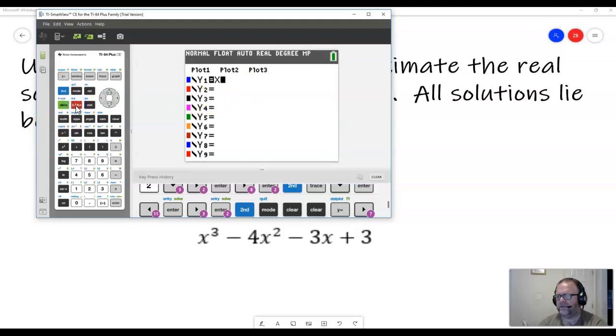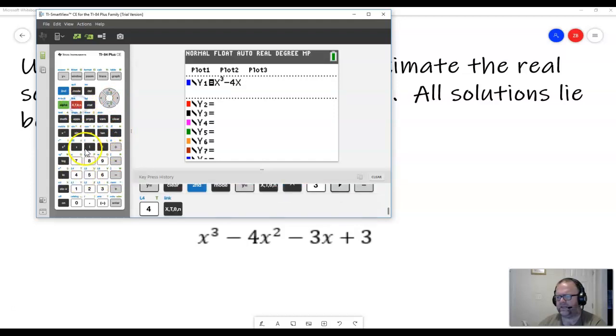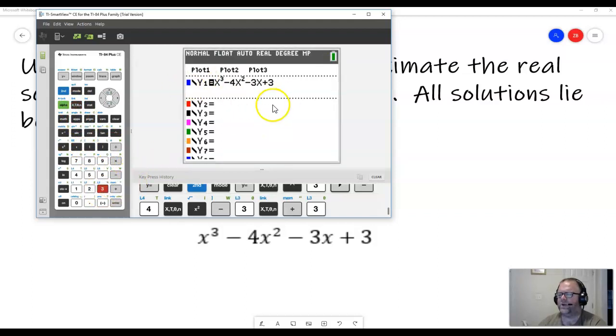So I'm going to hit x. And to raise something other than a square, I have to use this little carrot here. So raise to the third power, and then I move over. I'm going to say minus 4x and the squares. I can just hit this little squared button right here. And then minus 3x plus 3. So this is what I should look like here.